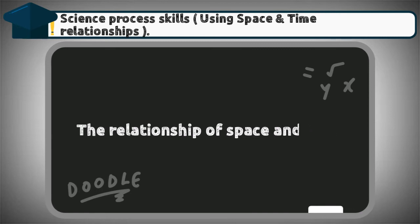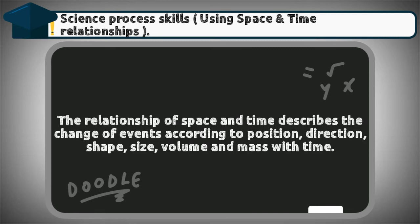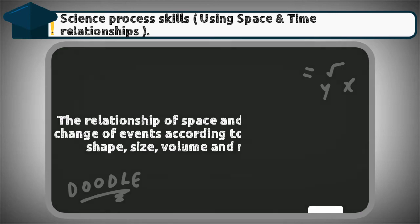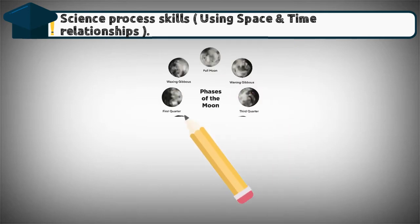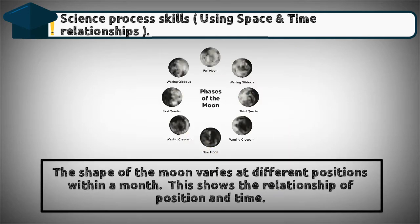The relationship of space and time describes the change of events according to position, direction, shape, size, volume, and mass with time. The shape of the moon varies at different positions within a month. This